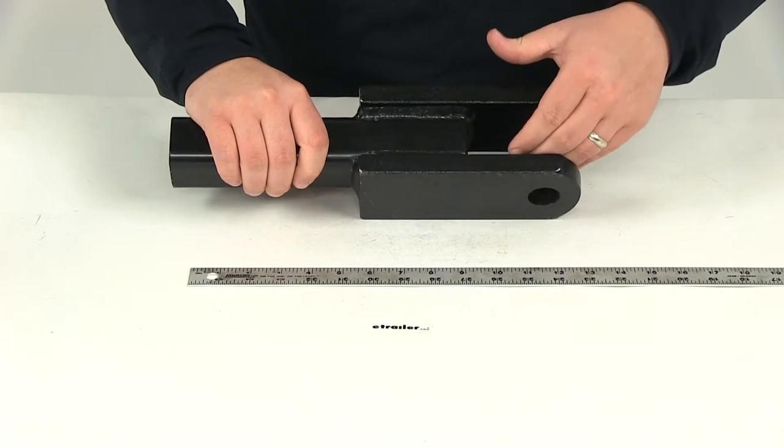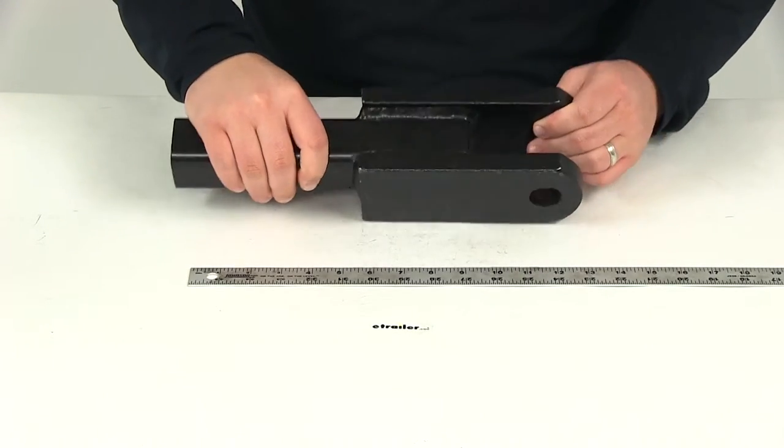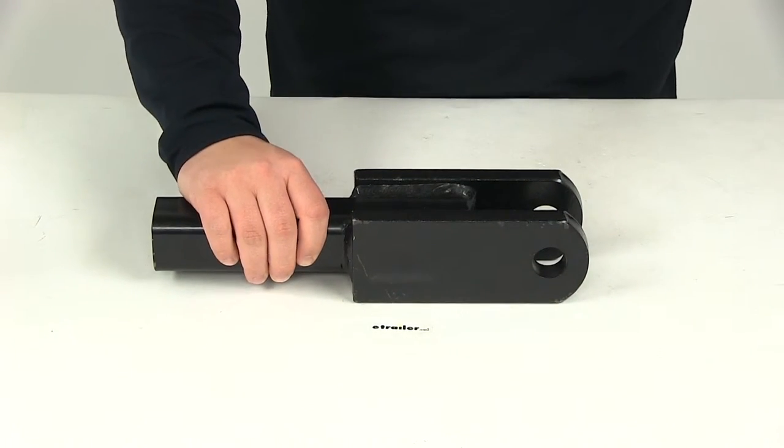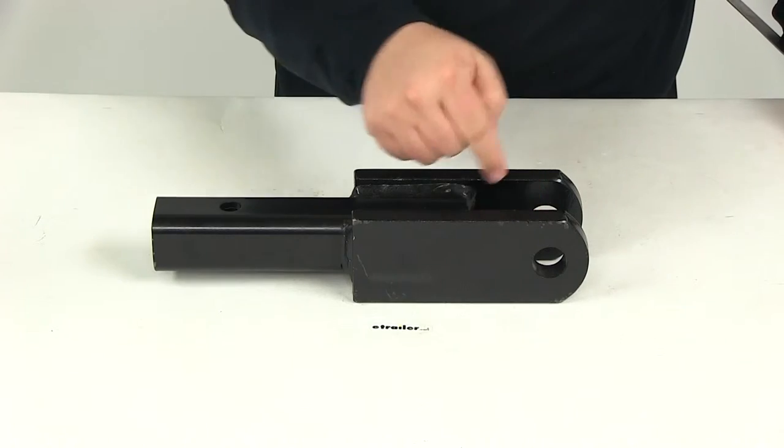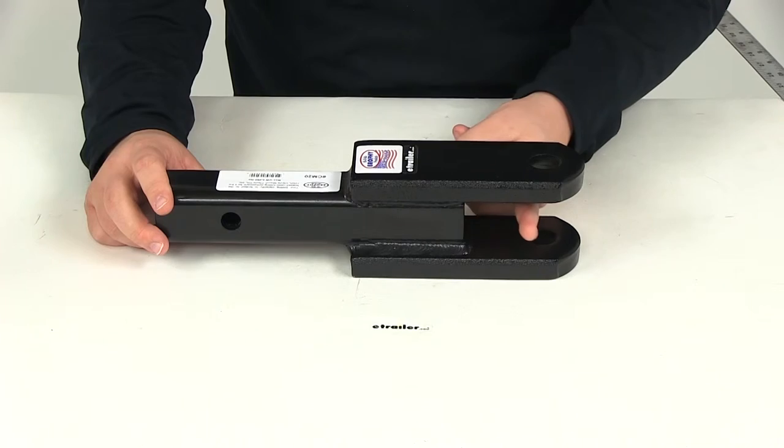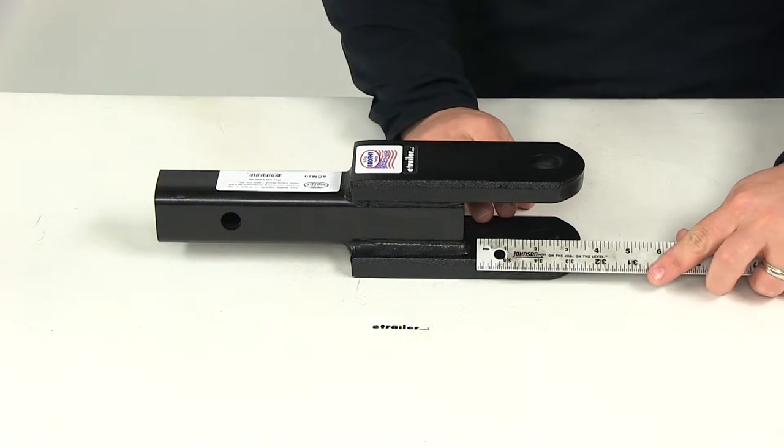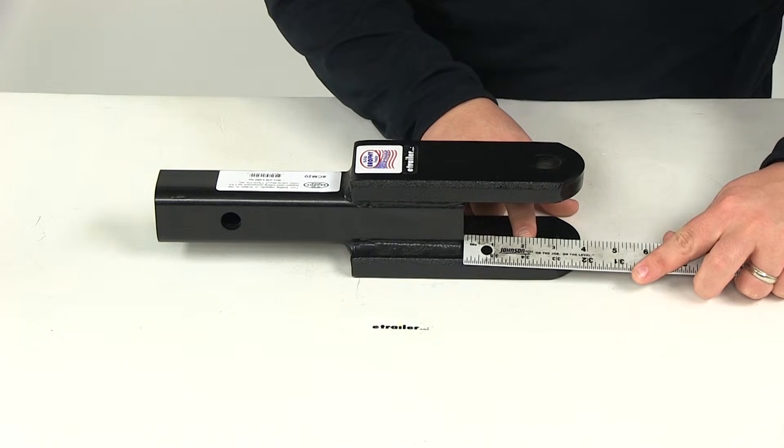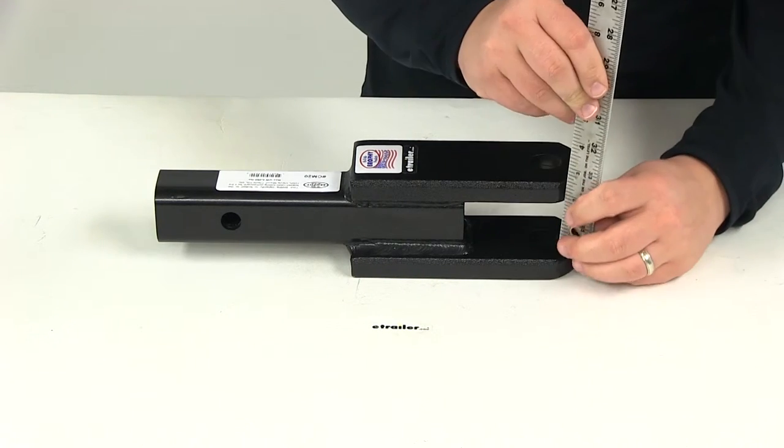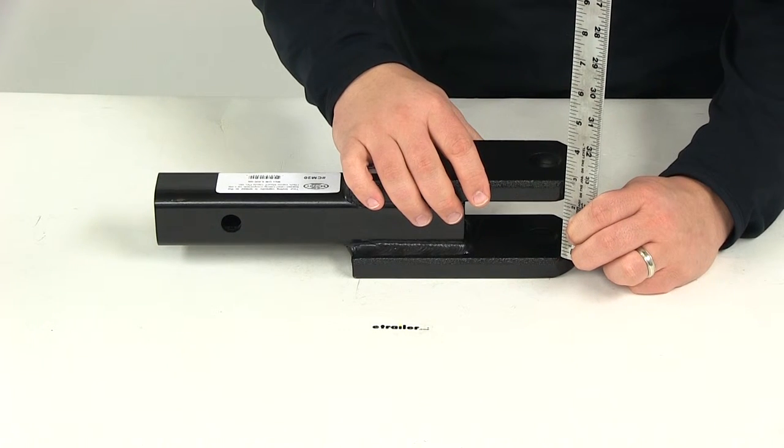With the one-inch diameter pin installed through the clevis attachment here, if we take a measurement, the distance that we would have from the back of that pin to the closest point here of the shank—so measuring the opening space that we would have with the pin installed—that would give us a measurement of right at two inches. And then the height that we have between the two draw bars is also going to measure right at two inches.